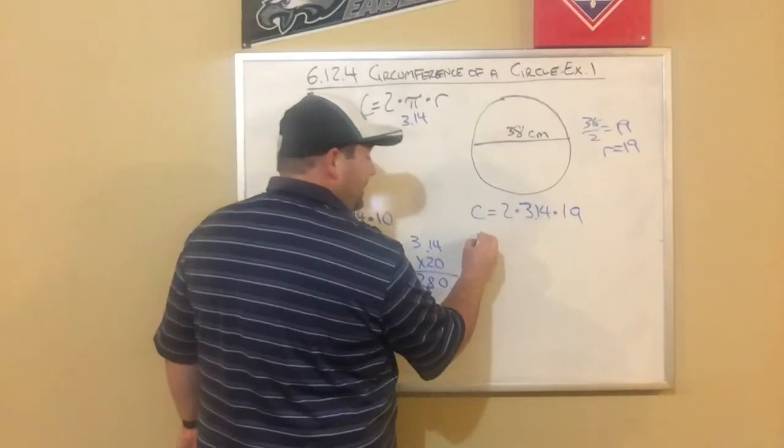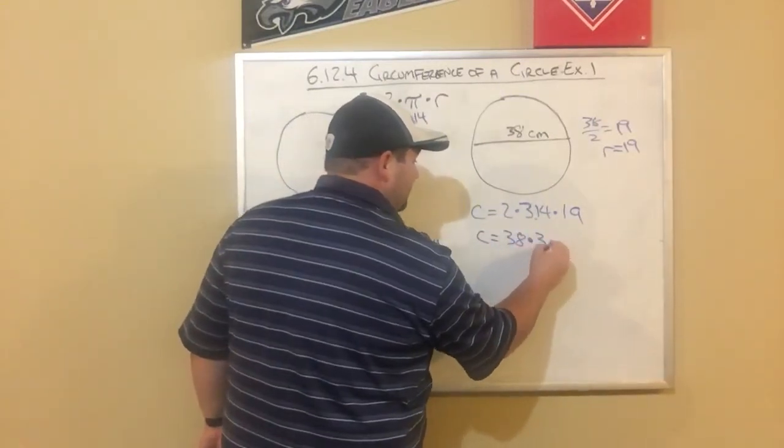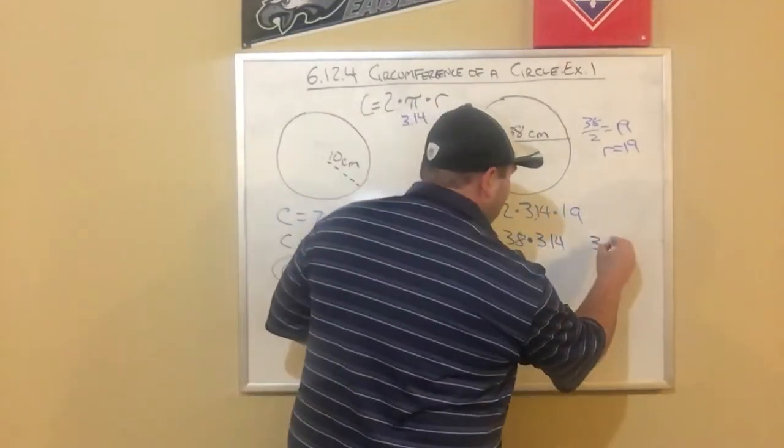I'm going to do the 2 times 19 first, which is 38. And now I'm going to do 38 times 3.14. Again, you could just do that with a calculator. It's fine. But if I didn't,